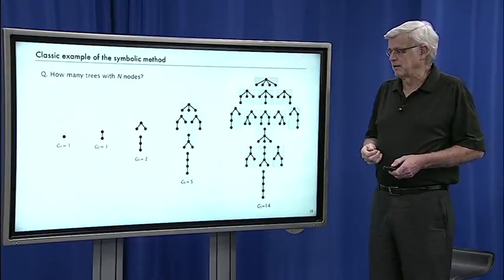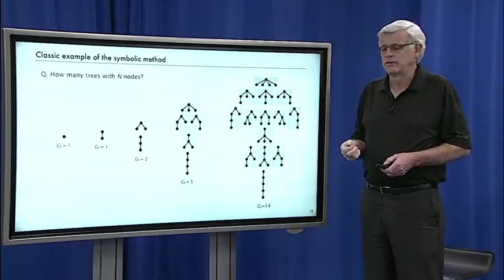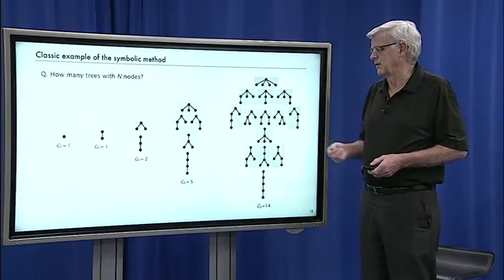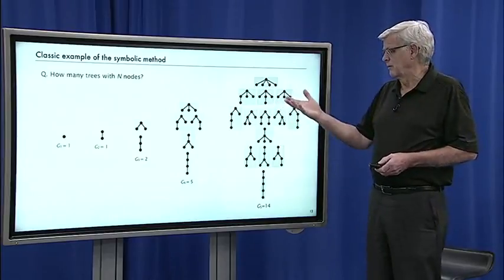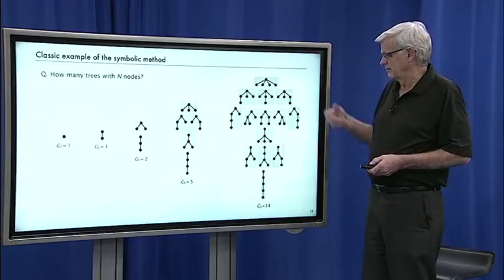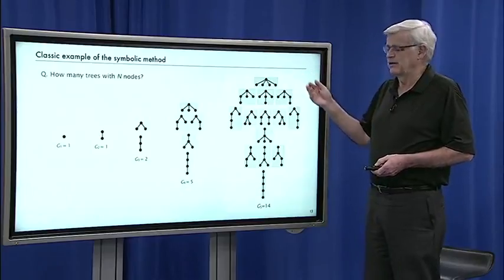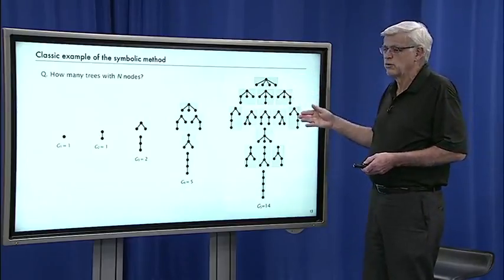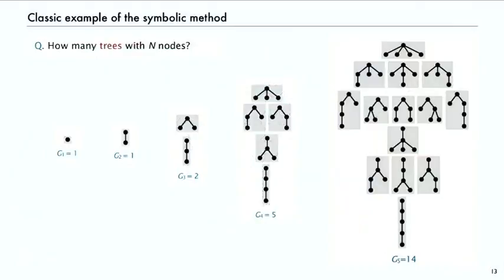The classic example of the symbolic method is trees. So how many trees are there with n nodes? Where a tree is described recursively as a tree. These are ordered rooted trees. It's a node connected to a sequence of trees.